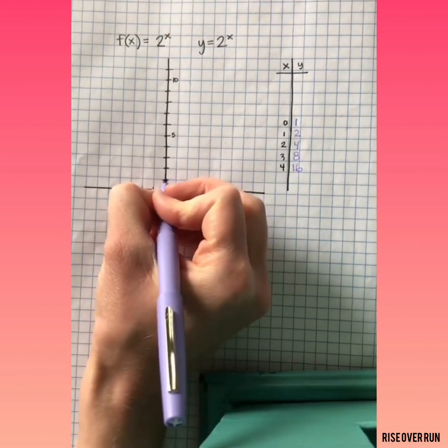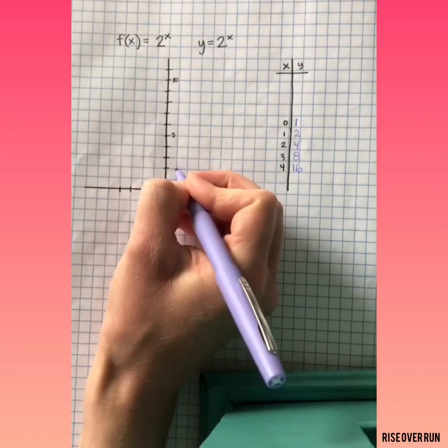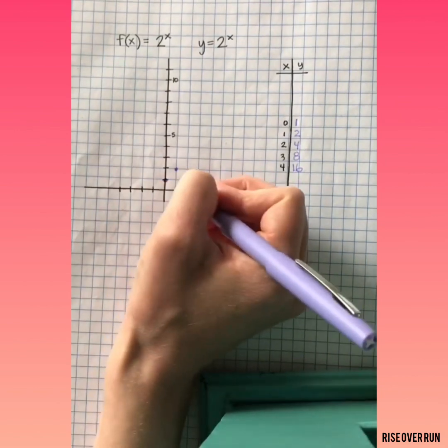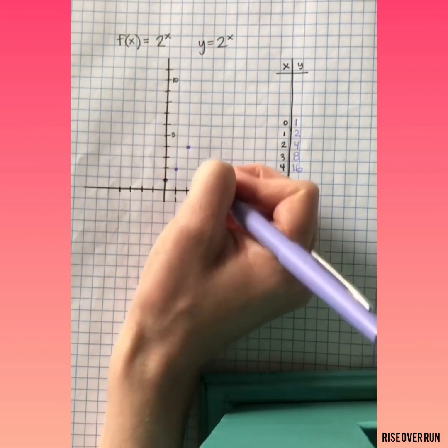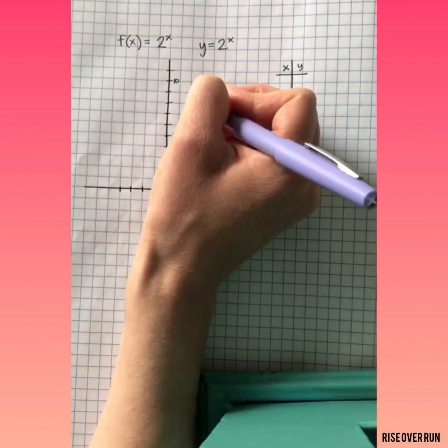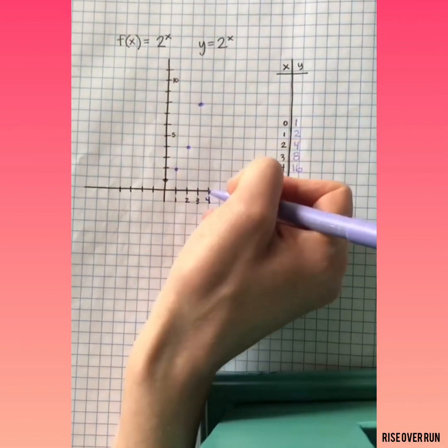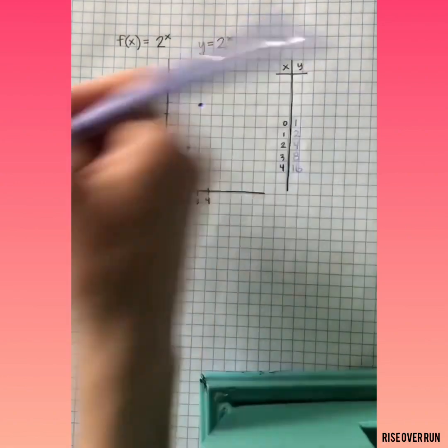Now let's graph these points on the graph to see what shape it starts to make: (0,1), (1,2), (2,4), (3,8), and (4,16). At this point, I'm off of my graph.